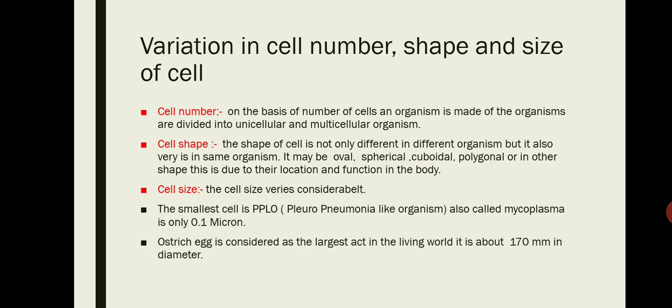Cell shape: the shape of cell is not only different in different organisms but also varies in the same organism. It may be oval, spherical, cuboidal, polygonal, or other shapes just due to their location in the body and their function in the body. And it also varies due to division of labor in the body.